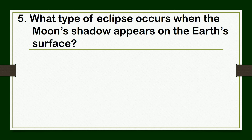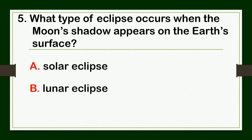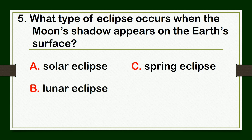What type of eclipse occurs when the moon's shadow appears on the Earth's surface? A. Solar eclipse, B. lunar eclipse, C. spring eclipse, or D. nip eclipse.